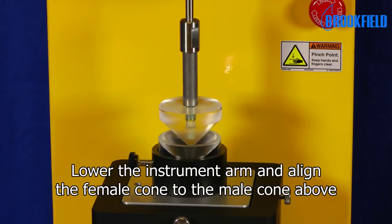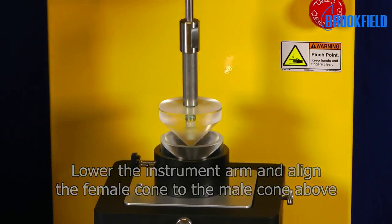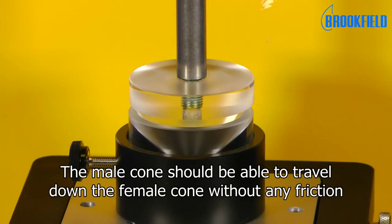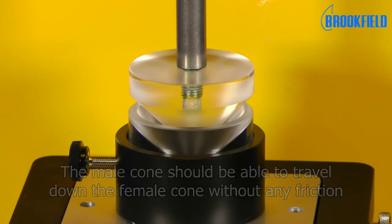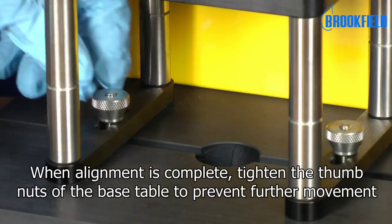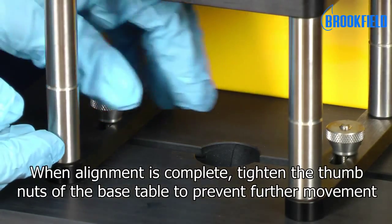Lower the instrument arm and align the female cone to the male cone above. The male cone should be able to travel down the female cone without any friction. When alignment is complete, tighten the thumb nuts of the base table to prevent further movement.